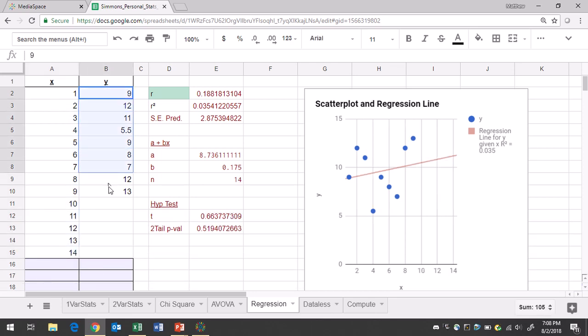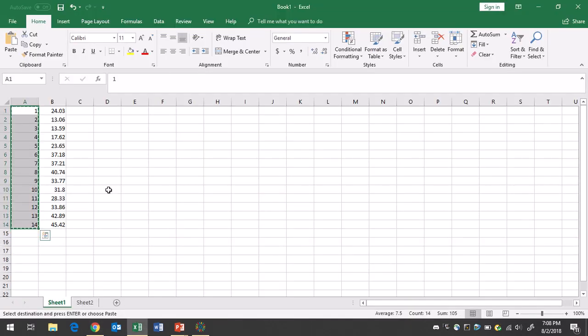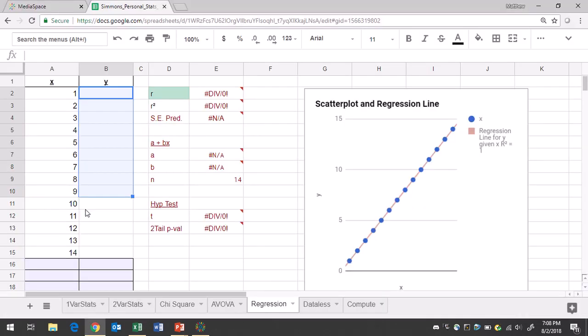I'm going to go ahead and clear out any data that's in column Y. We'll go back to our Excel spreadsheet, copy over our Y data, and put that in Google Sheets.